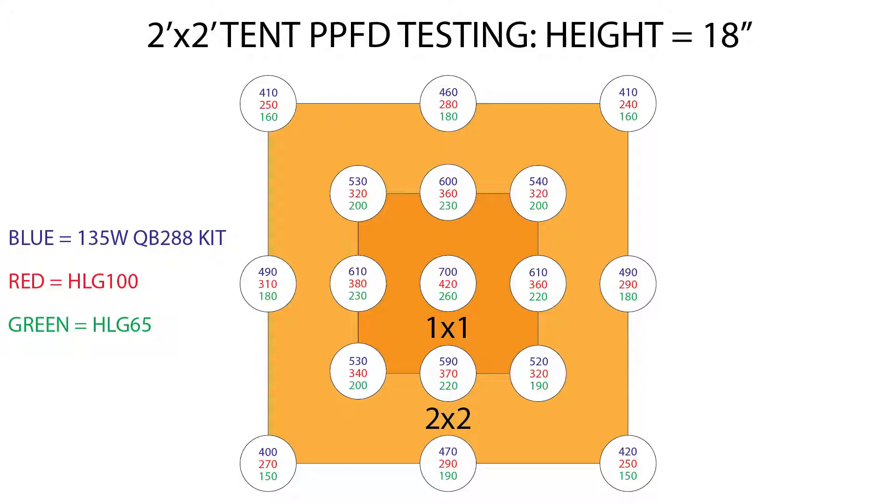So at 18 inches, the 135 watt kit was reading about 700 micromoles per meter squared per second, with the sensor centered directly beneath the light, and had an average of 565 micromoles around the 1 foot perimeter, and at 2 feet it averaged about 445 micromoles. The HLG100 had a PPFD of 420 on center, and maintained a 1 foot perimeter average of 350 micromoles. Around the 2 foot perimeter, it averaged 270 micromoles. And finally, the HLG65 measured 260 micromoles per meter squared per second dead center, and averaged 210 at 1 foot, and 170 at 2 feet.